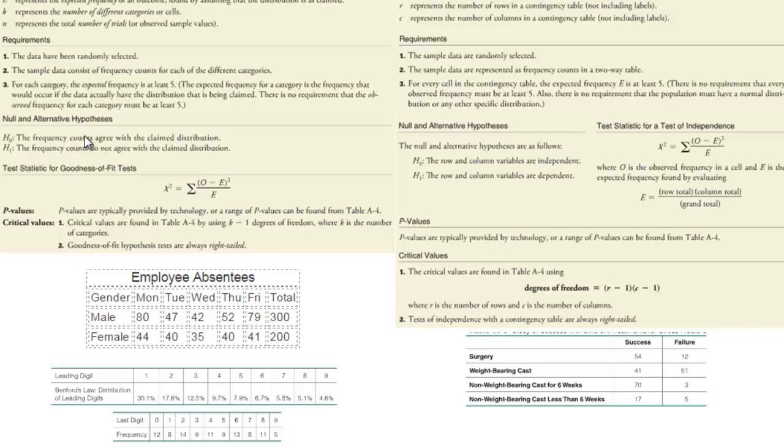The null is that everything is the same, that the frequency counts agree with the claimed distribution, just means that what we see in this row is a more or less mirror of what we see in the other row. For a two-way our null hypothesis is that the variables are independent, meaning that there is no difference between the columns or the rows, that the row doesn't have an effect on the columns. For our alternative, the frequency counts do not agree. So it is they agree versus they do not agree. Here it is they are independent versus they are dependent.